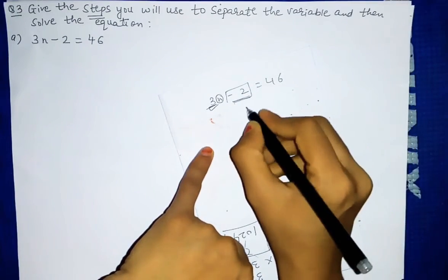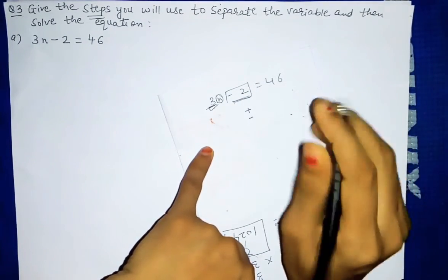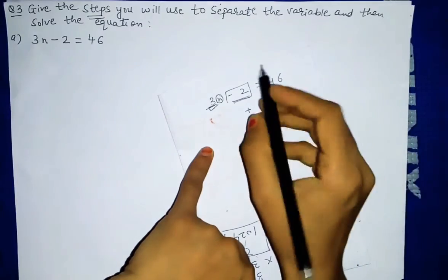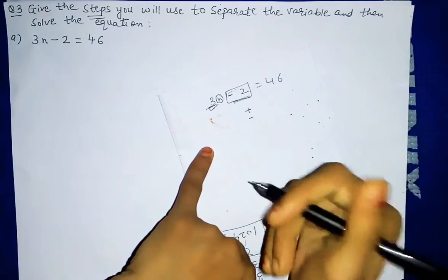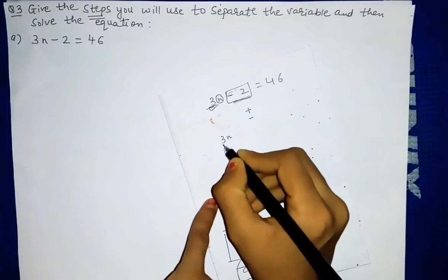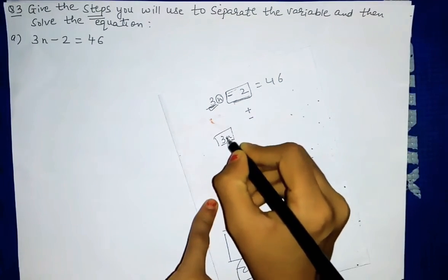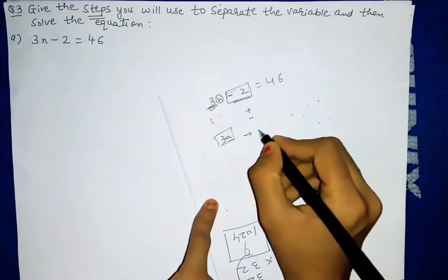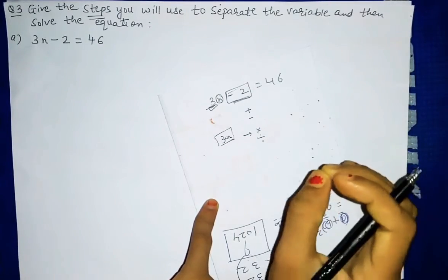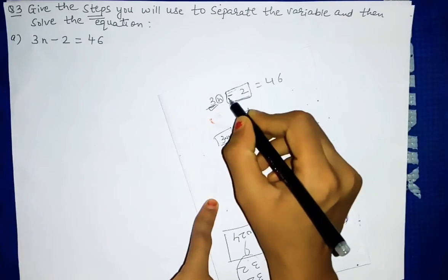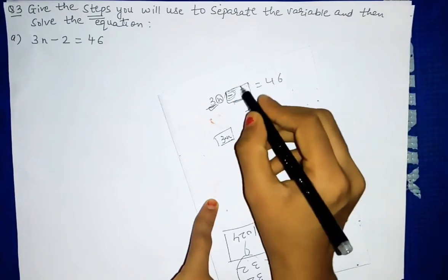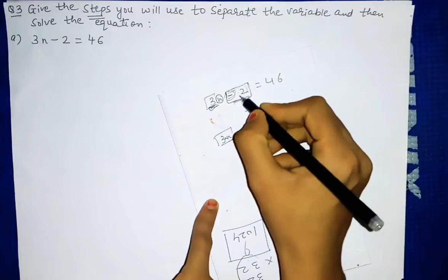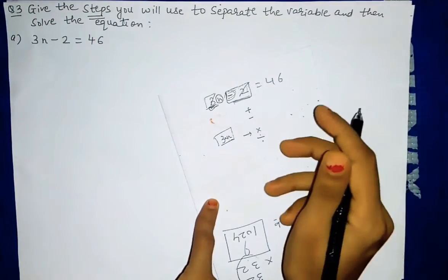Always whatever is given in plus or minus, that should be removed first. So the first step will be for the part given in plus or minus, and in the next step we will remove the 3n — the number which is in multiplication. So always first we have to remove the number which is in addition or subtraction. Whatever thing is given in plus or minus, we will remove that first, and then we will remove the number in multiplication.